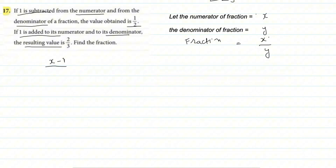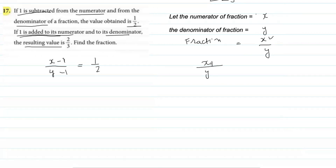Numerator is the top value of a fraction, so I wrote x. Denominator is the bottom value, so I wrote y. From the first condition: (x−1)/(y−1) = 1/2. From the second condition — one is added to numerator and denominator — the fraction becomes (x+1)/(y+1) = 2/3. So we now have two equations.